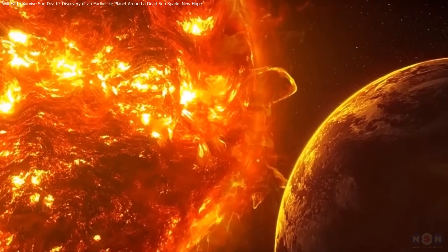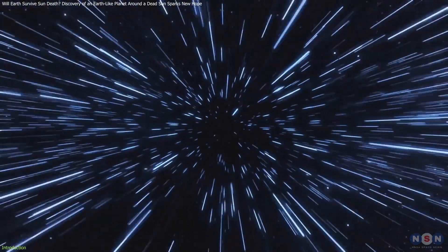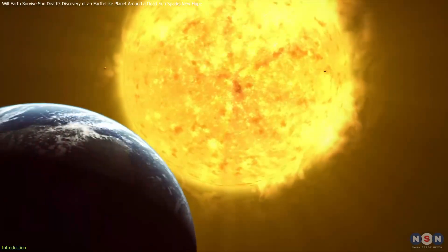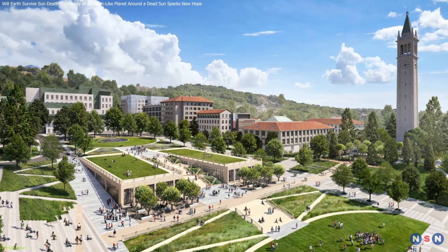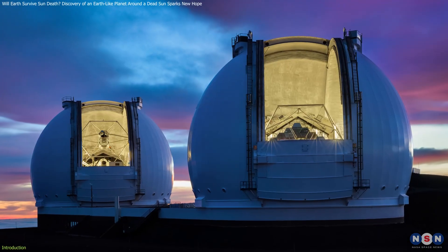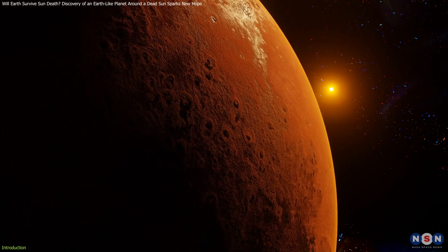An Earth-like planet has been discovered orbiting a dead sun and a white dwarf 4,000 light years away, offering a glimpse into a possible future for our own solar system. Identified by astronomers at UC Berkeley using the Keck telescope in Hawaii, this discovery is more than just another exoplanet find.